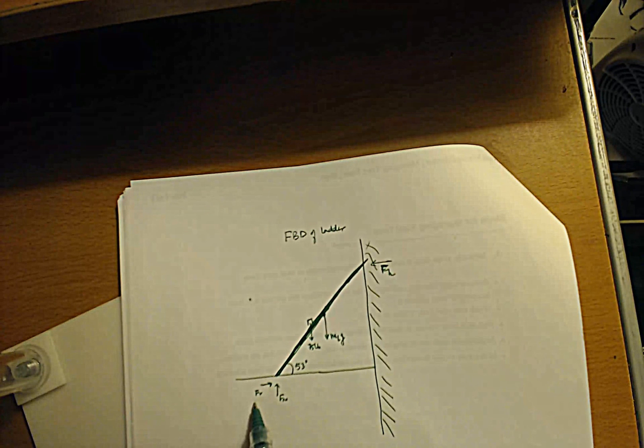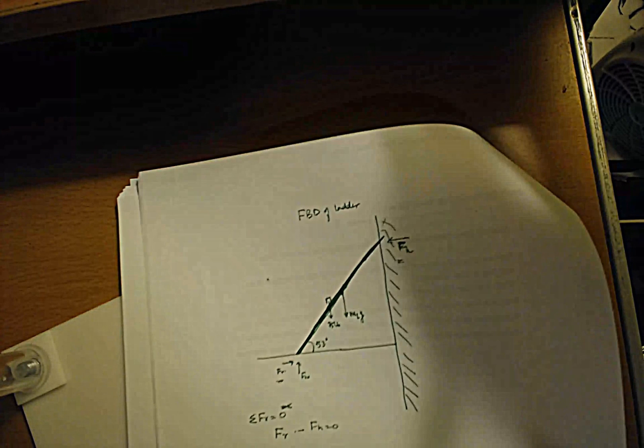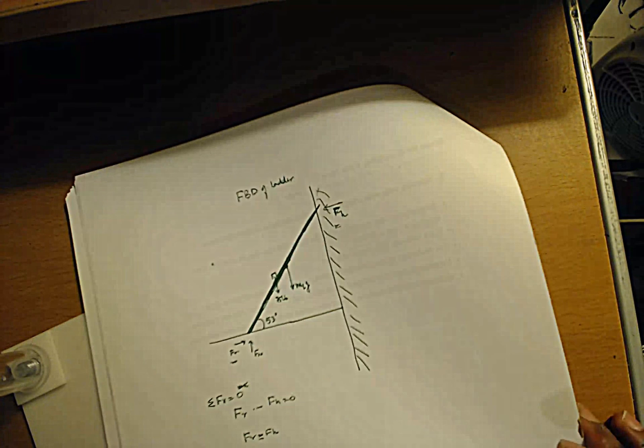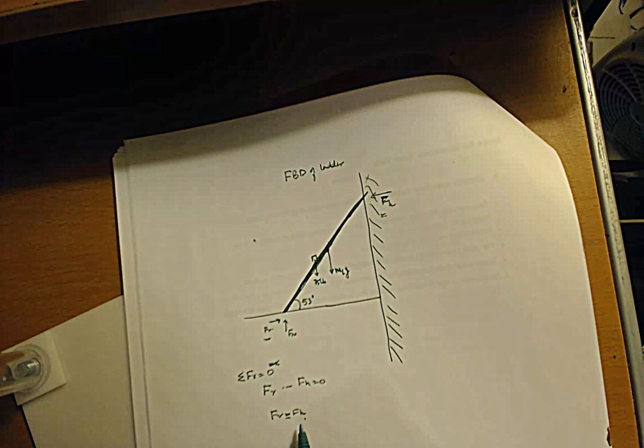Looking at the forces in the x-direction, there are just two. Using sum of all forces in x equals zero — it's zero because the ladder is in static equilibrium, it isn't moving. So FR minus FH equals zero, meaning FR equals FH. That tells us if we find FH, we find FR, and vice versa.